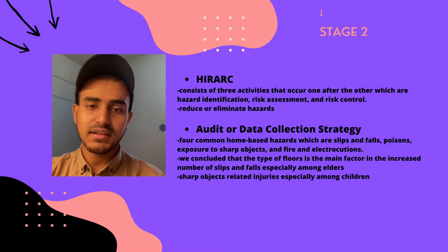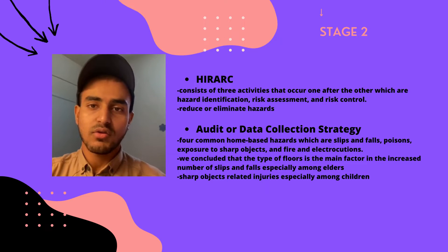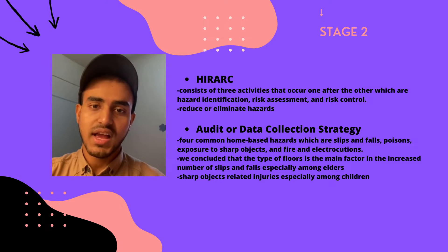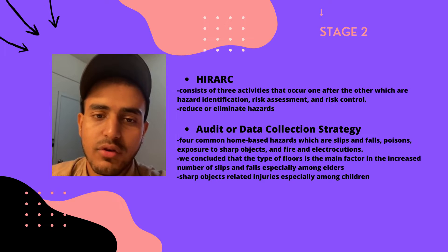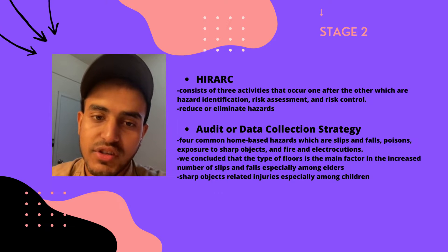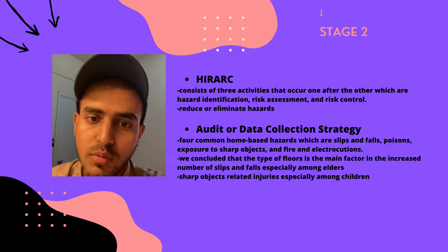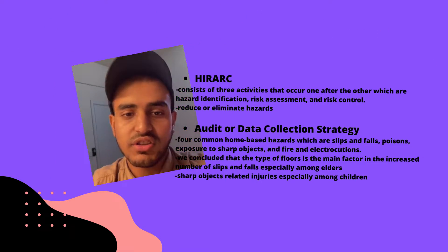Whereas in the second part, we found that there are four most apparent hazards at our houses, which are slips and falls, poisons, fire and electrocutions, and exposure to sharp objects. It is also found that the main causes of these hazards are the type of floors, which is the main factor in the increased number of slips and falls, especially among elders. Whereas improper storing conditions lead to more poison cases as well as sharp object-related injuries, especially among children.